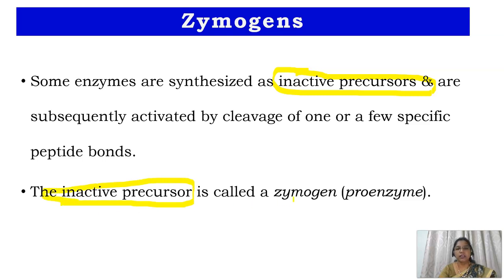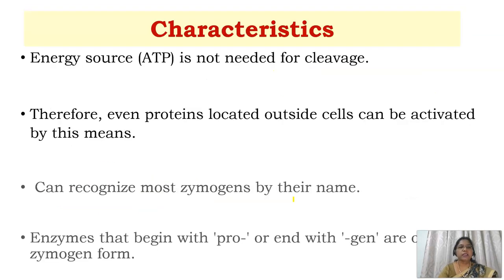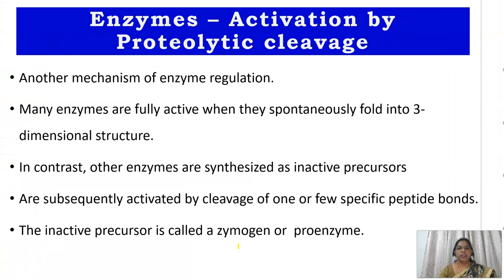These inactive precursors are called zymogens. They do not need energy to cleave the bond, so even proteins located outside the cells can be activated by this method. We can recognize most zymogens by their name because they begin with 'pro' or end with 'gen' — for example, pro-carboxypeptidase, pro-elastase, trypsinogen, and pepsinogen.